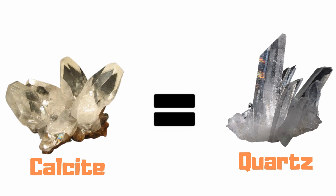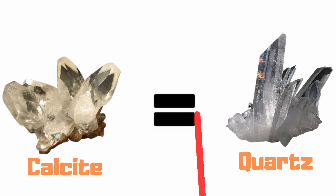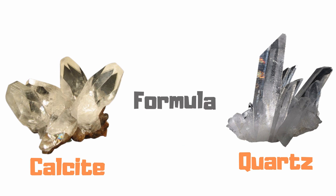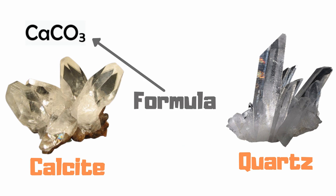Quartz and calcite have many things in common, but they also have many differences between them. While calcite is calcium carbonate, quartz is silicon dioxide. Quartz is also a combination of oxygen and silicon.